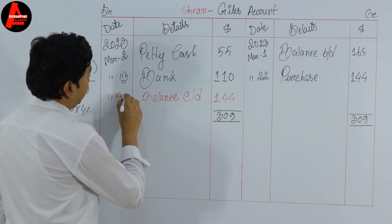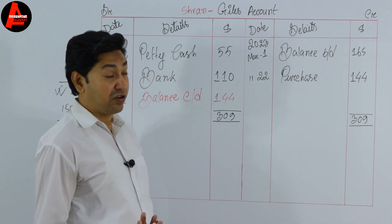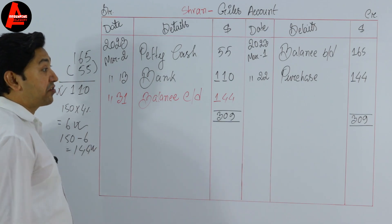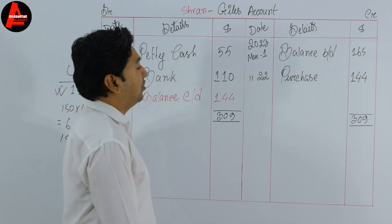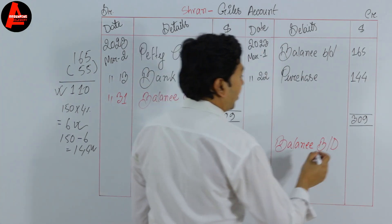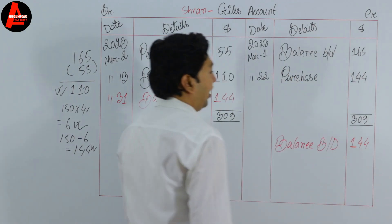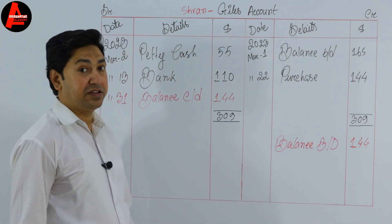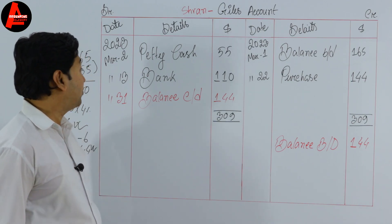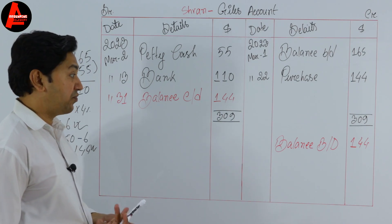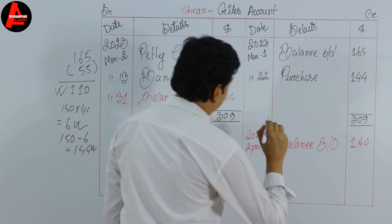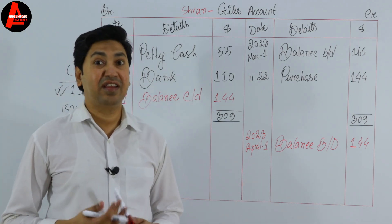Now bring down the balance. Below the total on the credit side, write 'Balance b/d' — brought down — for the same amount of $144. The date for balance b/d is the first day of the next month. Since we are doing March, the next month is April 1st, so we write 2023 April 1. This is how you prepare the supplier ledger account.